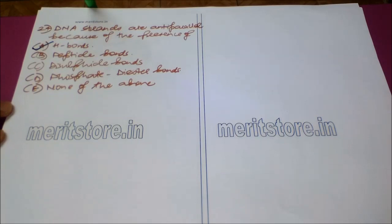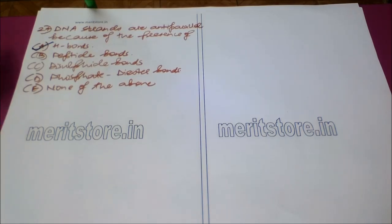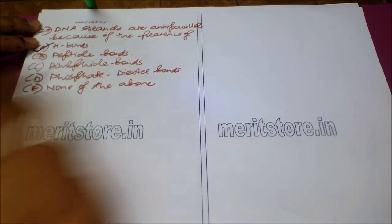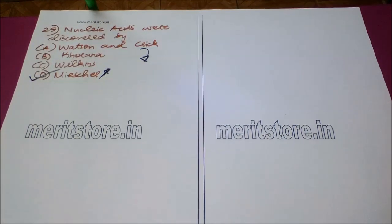Our next question is: DNA strands are antiparallel because of the presence of — Option A: hydrogen bonds, Option B: peptide bonds, Option C: disulfide bonds, Option D: phosphodiester bonds, and Option E: none of the above. The correct answer is Option A: hydrogen bonds, which make the DNA strands antiparallel.